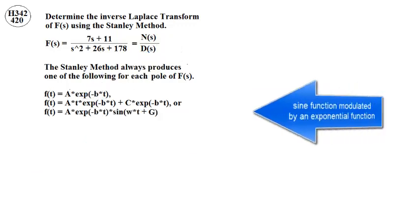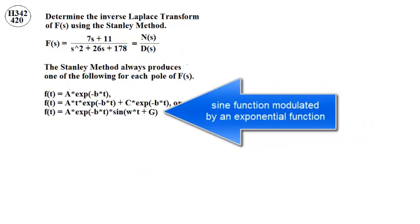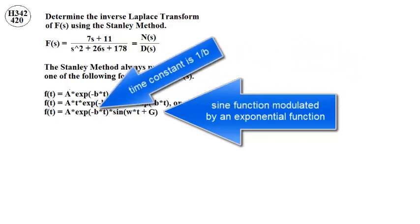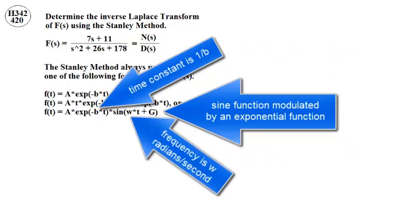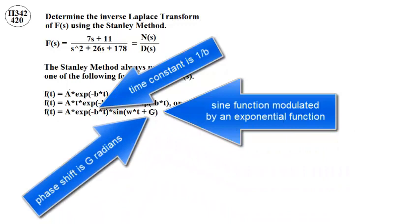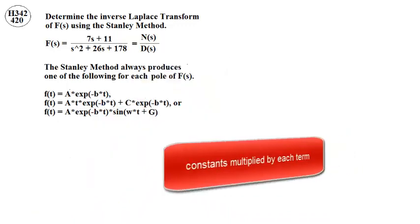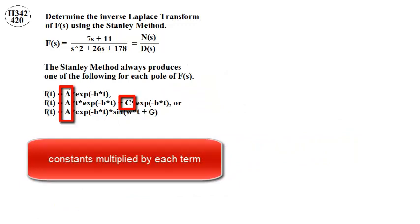It could be a sine function modulated by an exponential function. The time constant of the exponential is 1 over b, the radian frequency is omega, and the phase shift is g. And there are constants multiplying each term.